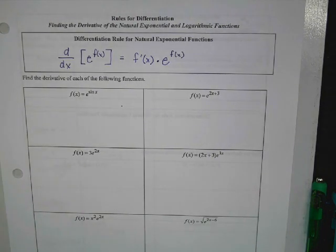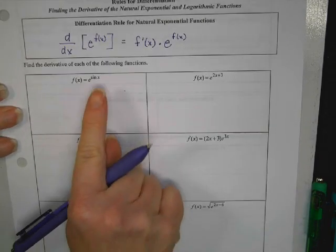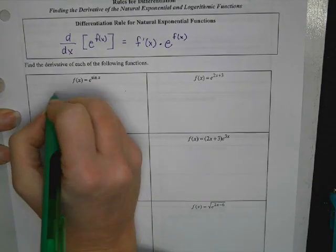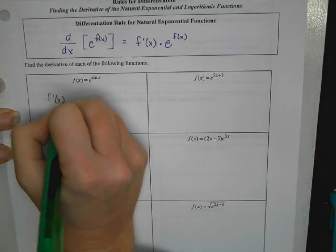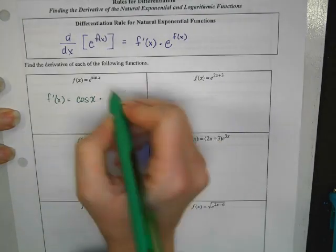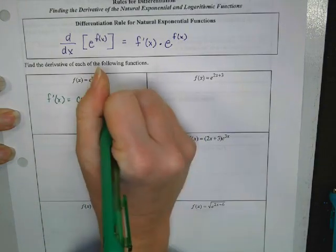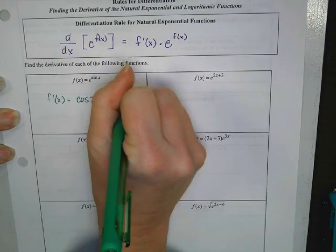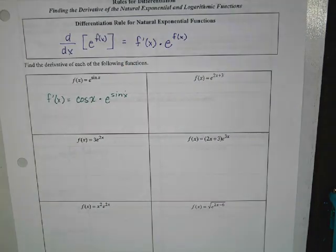So, this one's pretty easy because it pretty much is just a chain rule. So, if we look at this first one, I've got to take the derivative of my inside piece, and I have a piece inside the treehouse, and what's the derivative of sine x? Cosine x. All right. So, the first part is going to be cosine x, and then I multiply that by the derivative of the whole thing, which would be e to the sin x. Can you leave it like that? Yeah. That's it.